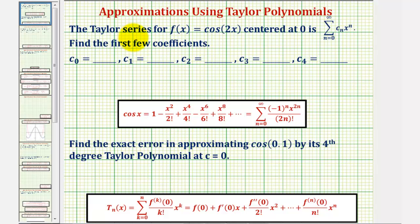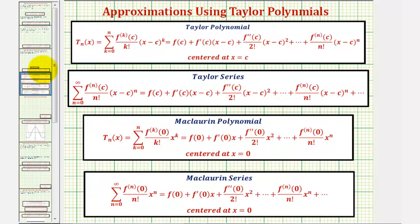Because the Taylor series is centered at zero, and so is the Taylor polynomial, we can call these a Maclaurin series and a Maclaurin polynomial. For a quick review: a Taylor series is an infinite series while a Taylor polynomial has a finite number of terms — the last term has degree n. For a Maclaurin polynomial and Maclaurin series, both are centered at x = 0.